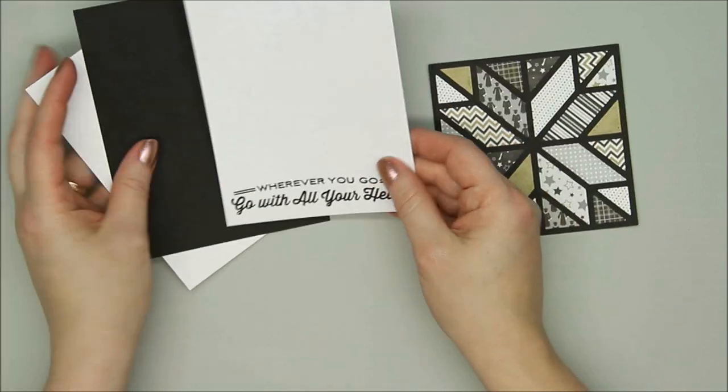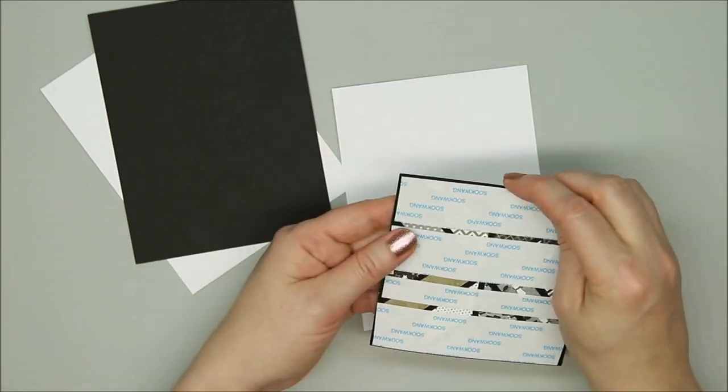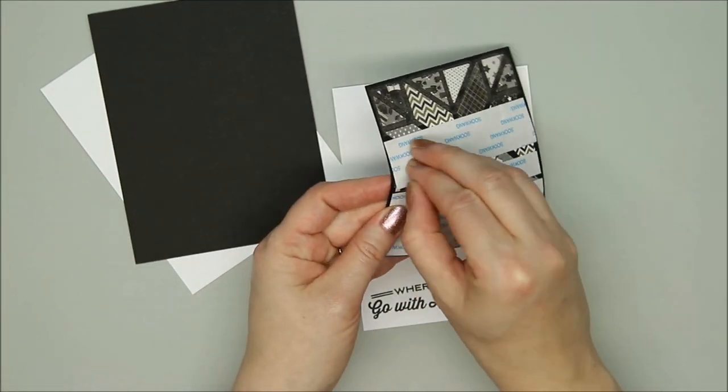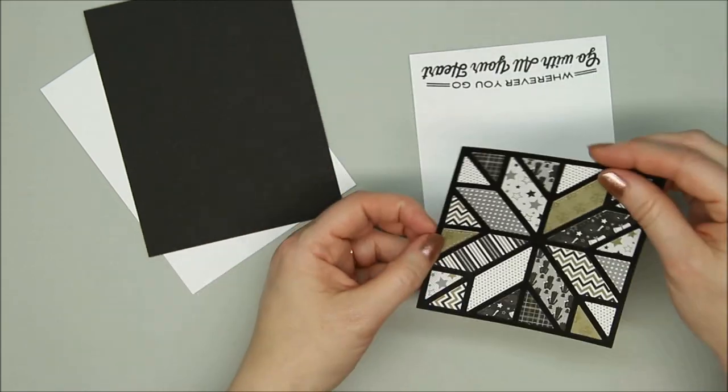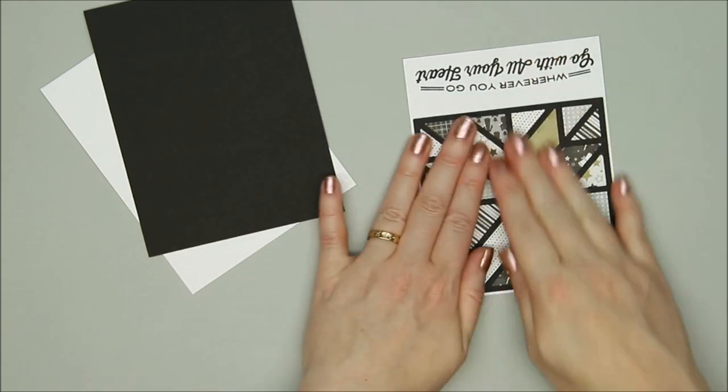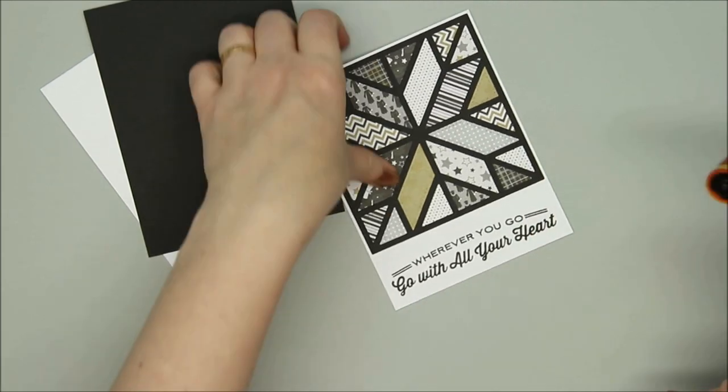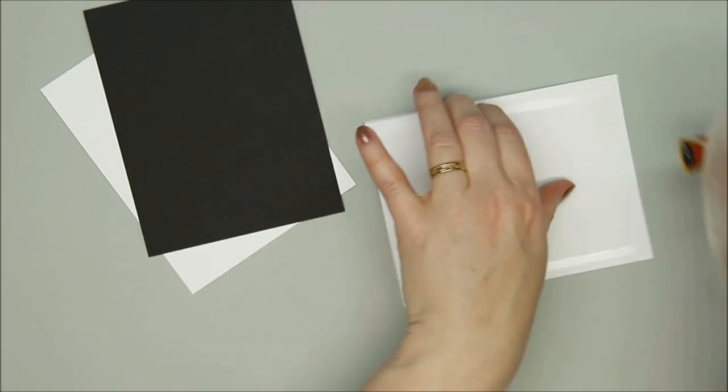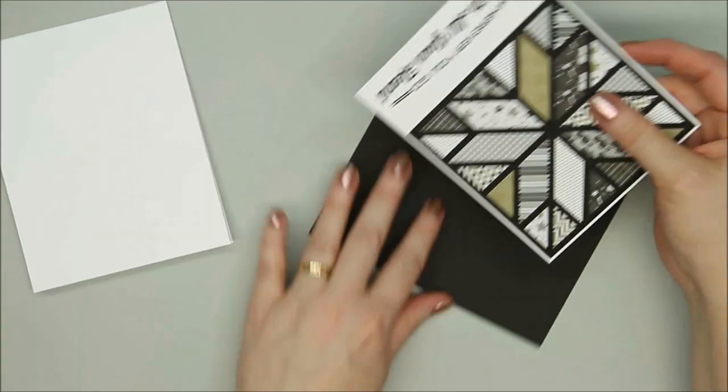The quilt square is 4 inches by 4 inches in size. I'm adhering it to a piece of white cardstock that is 4 1⁄8 by 5 3⁄8 inches. I already stamped the sentiment. I love using matted layers, so I'm using some black cardstock to add contrast.